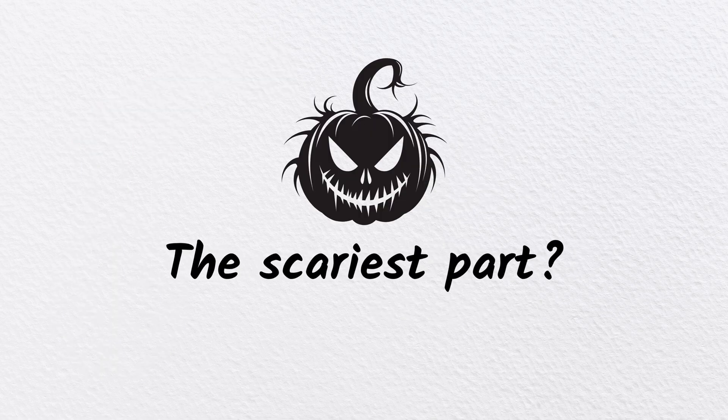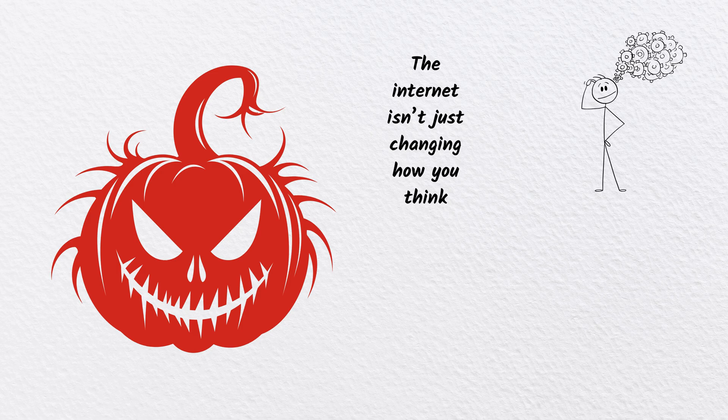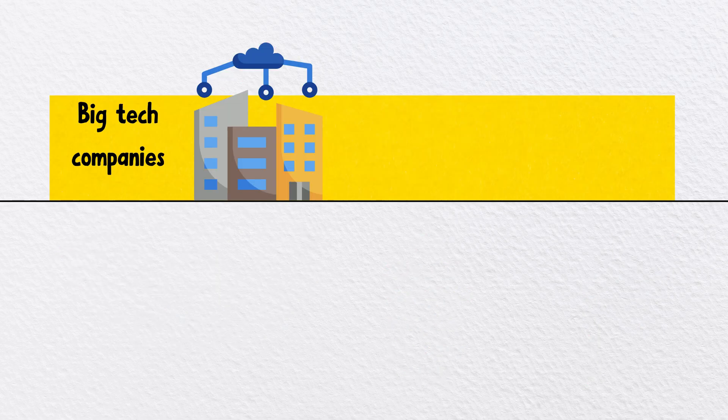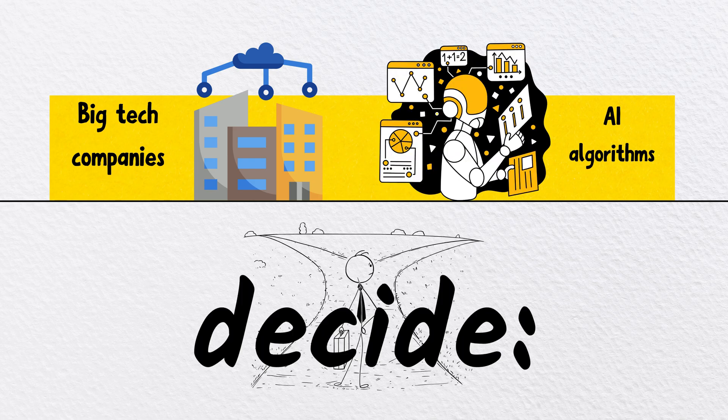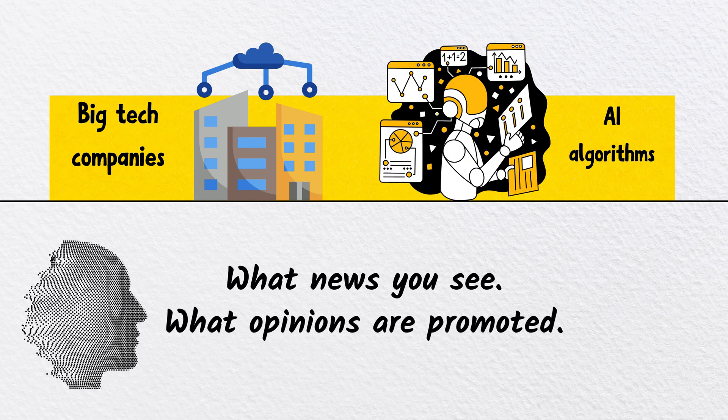The scariest part? The internet isn't just changing how you think, it's changing what you think. Big tech companies and AI algorithms decide what news you see, what opinions are promoted, what content gets hidden. And the more you engage with a certain type of content, the more the algorithm feeds it to you.